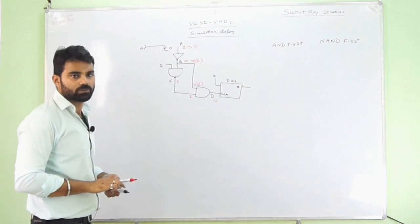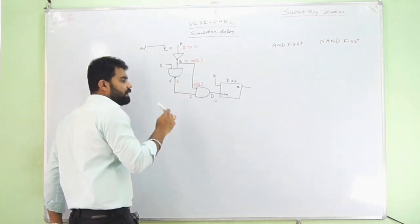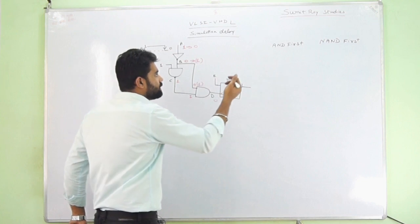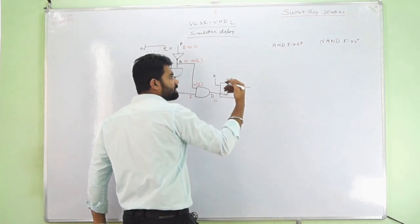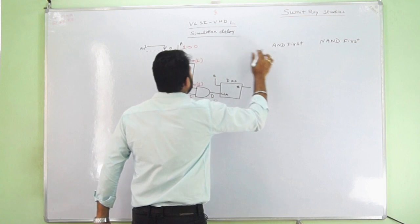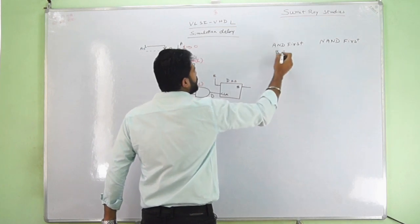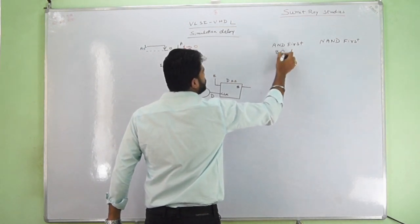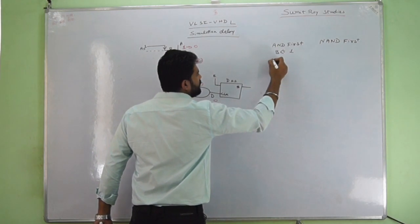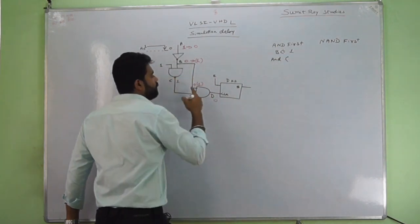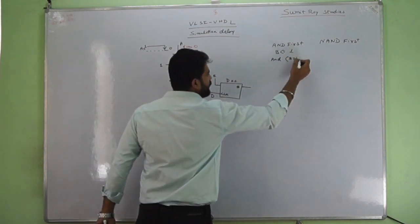If AND logic is working faster, its result will be considered first, and NAND will be calculated later. Step by step: A transitions from 1 to 0, so first B is executed and becomes 1. Then AND works with input B equal to 1 and the earlier output C equal to 1.